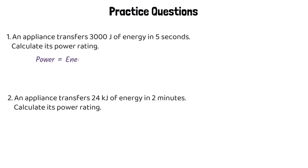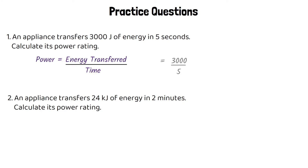Okay, to review these: for the first question we're going to need to use the same equation — power equals energy transferred over time. We substitute those values into the equation: energy transferred is 3,000, time is five. 3,000 divided by five is 600 watts.